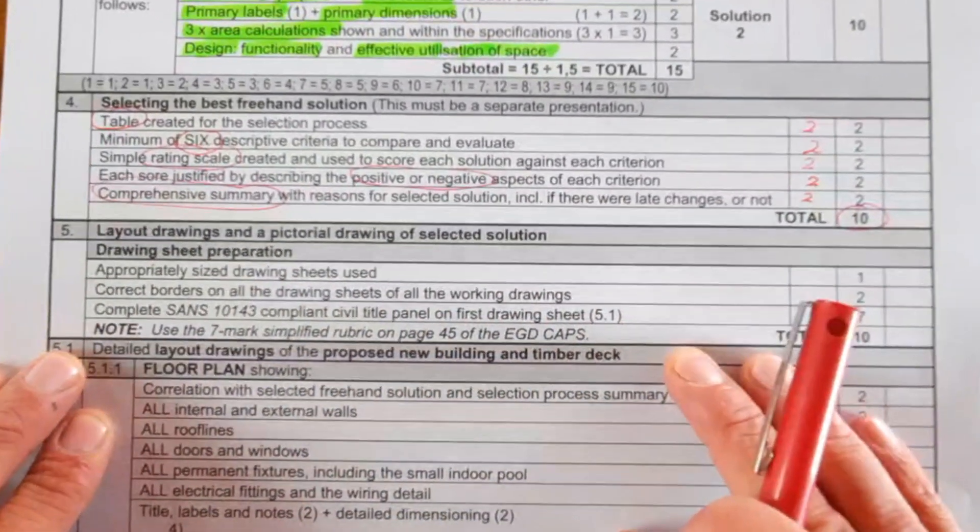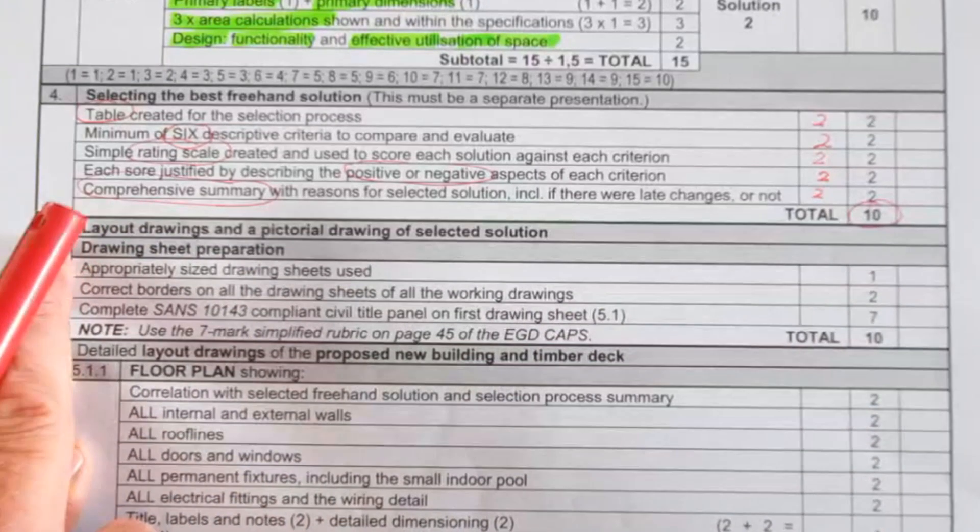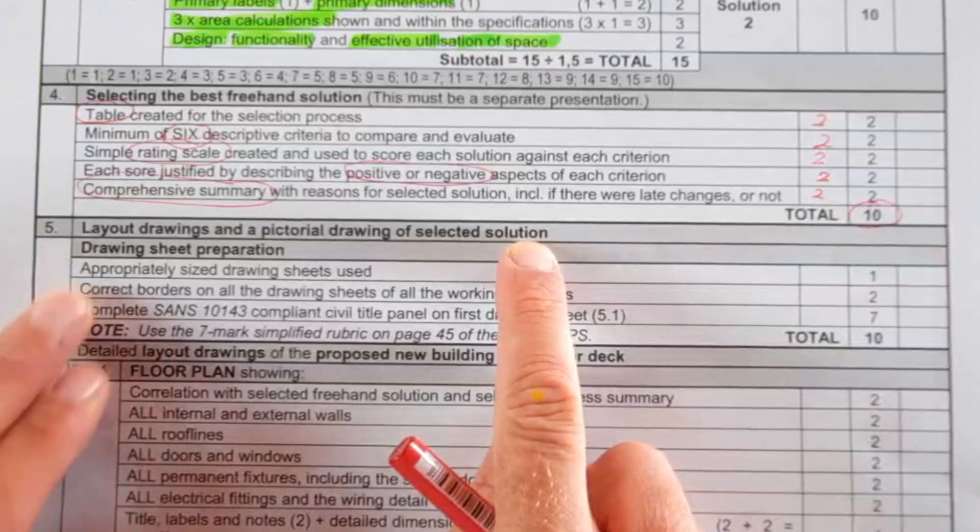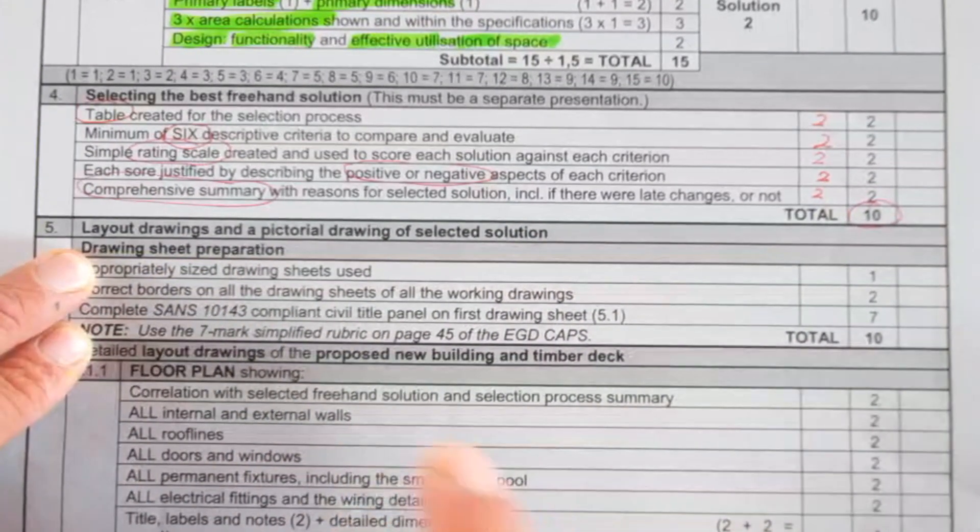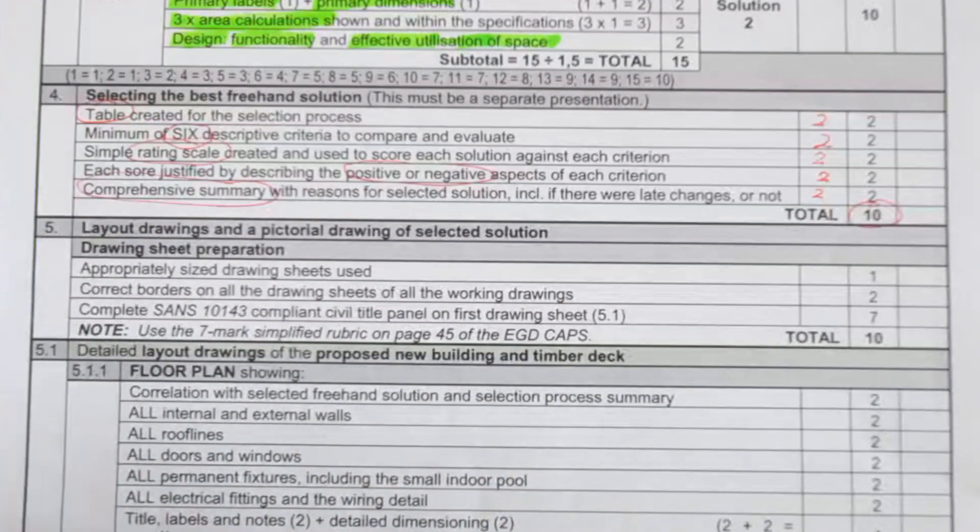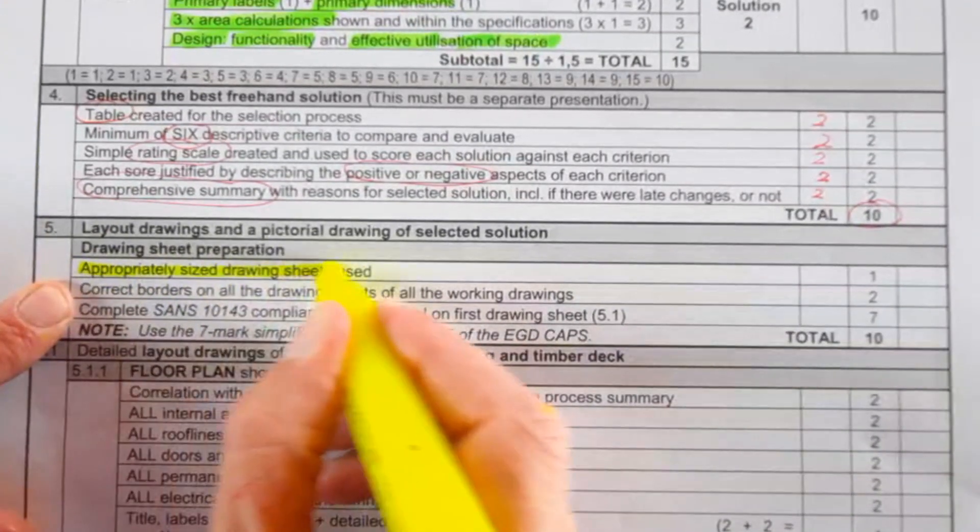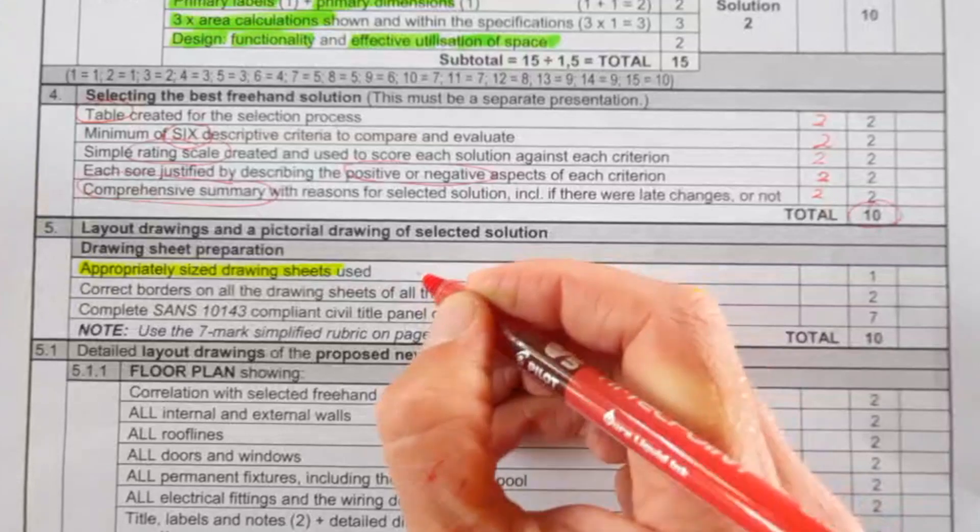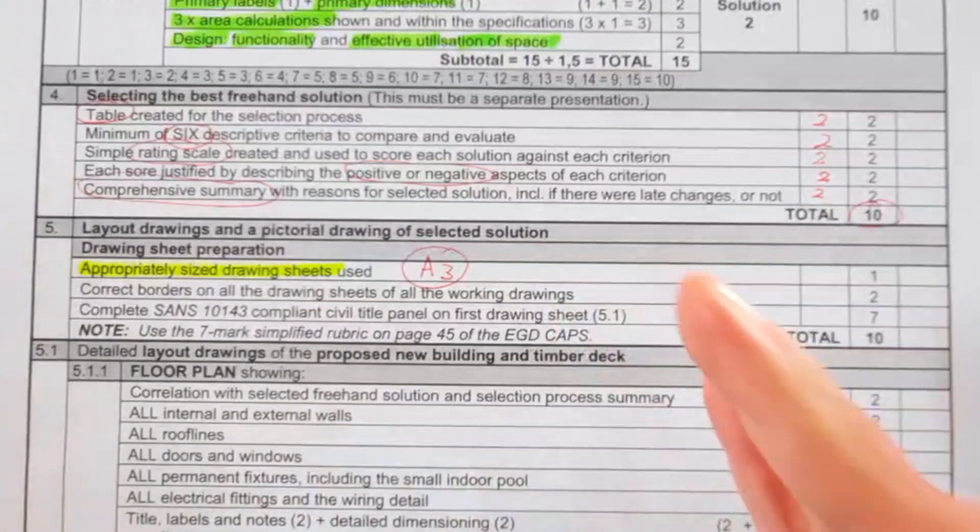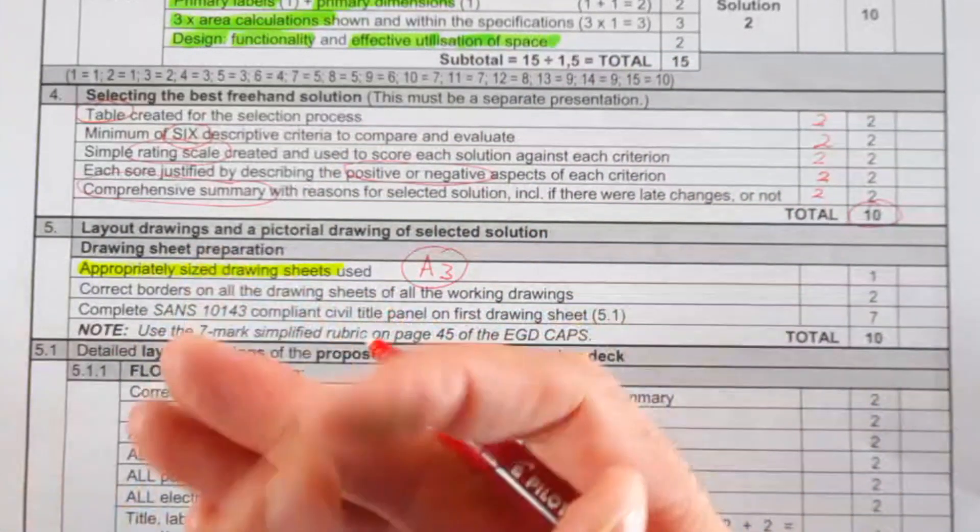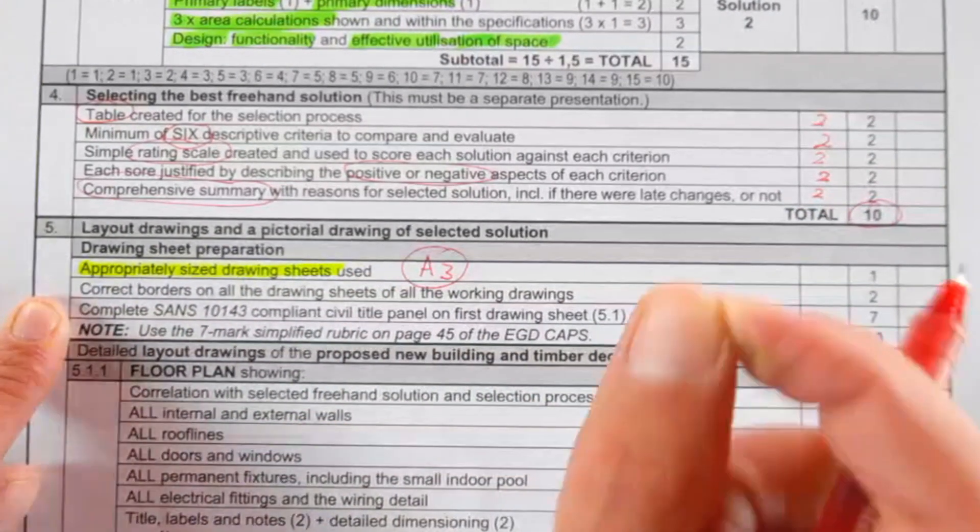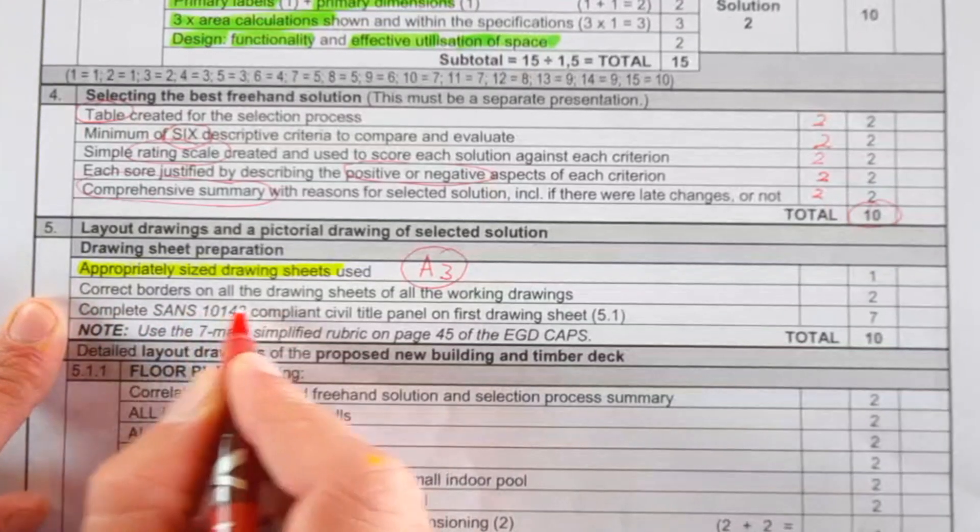If we look at the checklist provided for civil PAT tasks in EGD grade 11 and 12, point number four asks you to provide layout drawings and pictorial drawings of selected solutions on drawing sheets that are prepared according to this criteria. You must use appropriately sized drawing sheets, which means A3 paper when doing your actual working drawings: floor plans, elevations, sectional elevations, two-point perspectives, and site plans must be on A3 pages. Each of these papers must have correct borders on all drawing sheets.